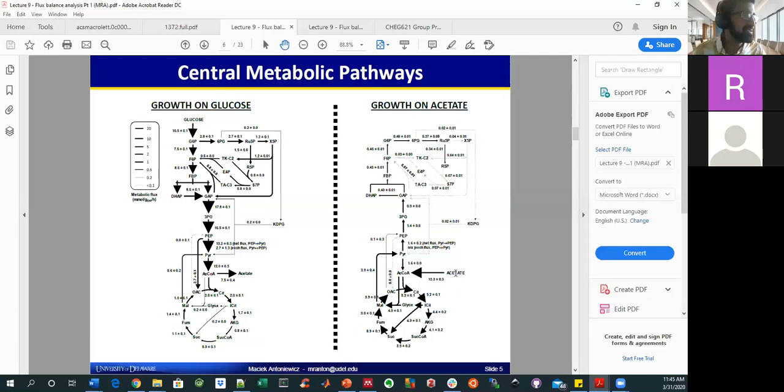Here you can see, on the other hand, what happens when acetate is your carbon source. And you could see just how much more flux goes through the TCA cycle. And then how these steps have such a dramatically different rate and directionality of carbon flux. Any questions so far?